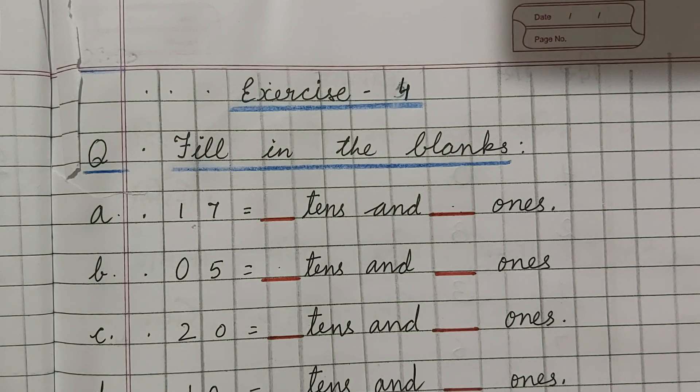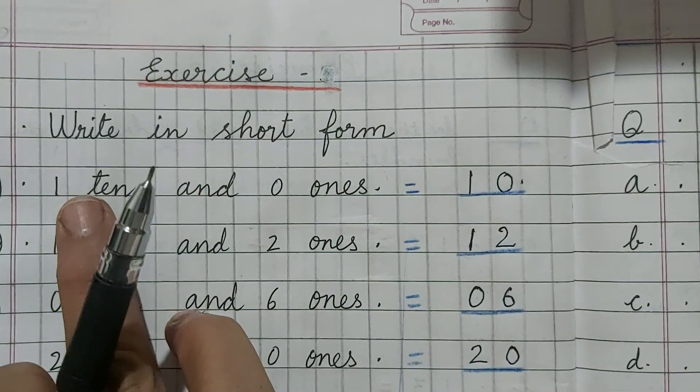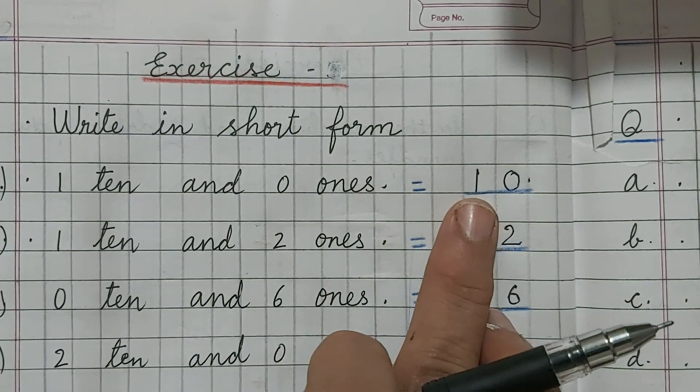The first exercise was draw the bundles. See the number, draw the bundles. The second exercise we have done, write in short form. The form is written 1 ten and 0 ones and we have to take this 1 and 0 and write here after the equal sign.